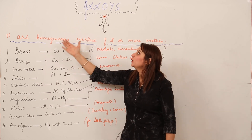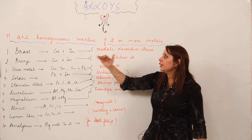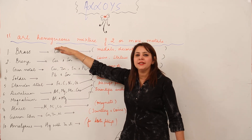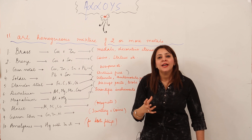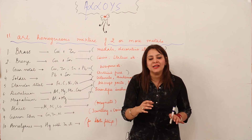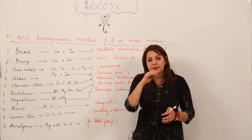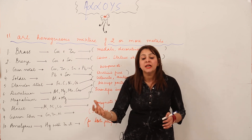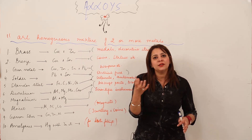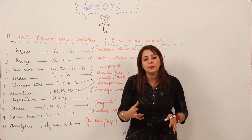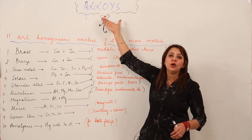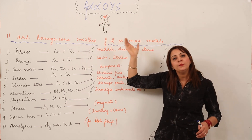Alloys are homogeneous mixtures of two or more metals. A mixture is a combination of substances mixed in any ratio, not chemically combined. Mixtures are divided into homogeneous and heterogeneous types. When components thoroughly mix with definite properties throughout — meaning we cannot see different phases — it is a homogeneous mixture. Alloys are an example of a homogeneous mixture of two or more metals.